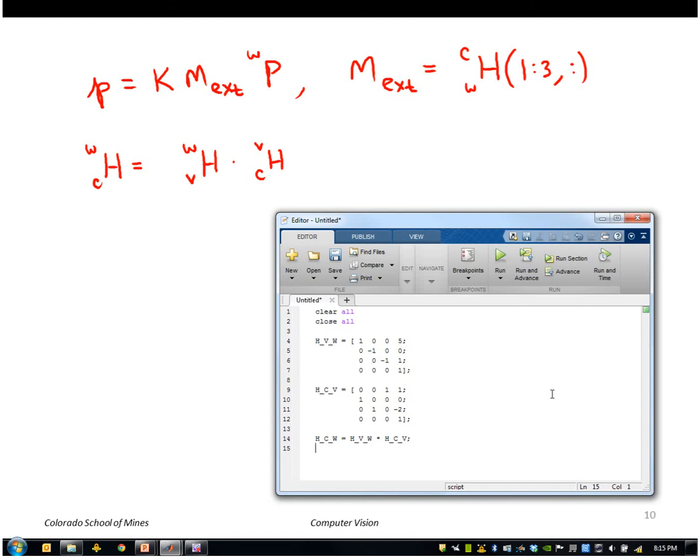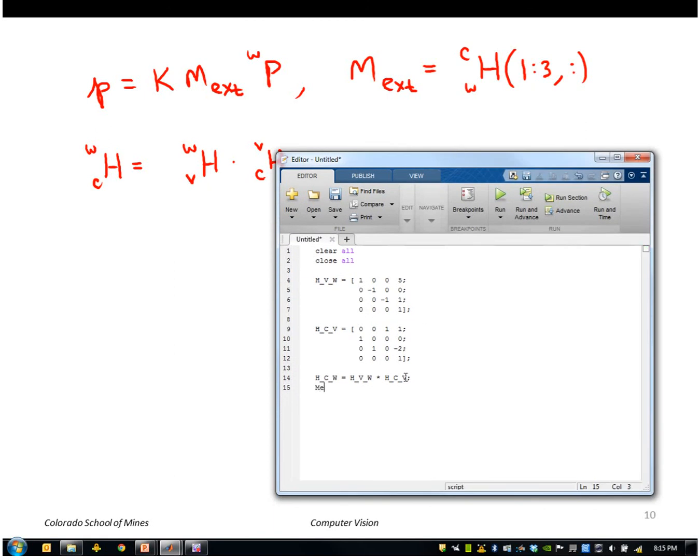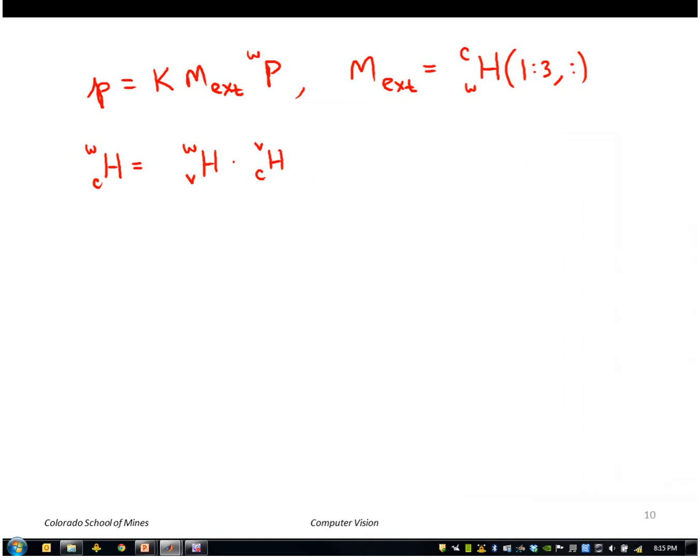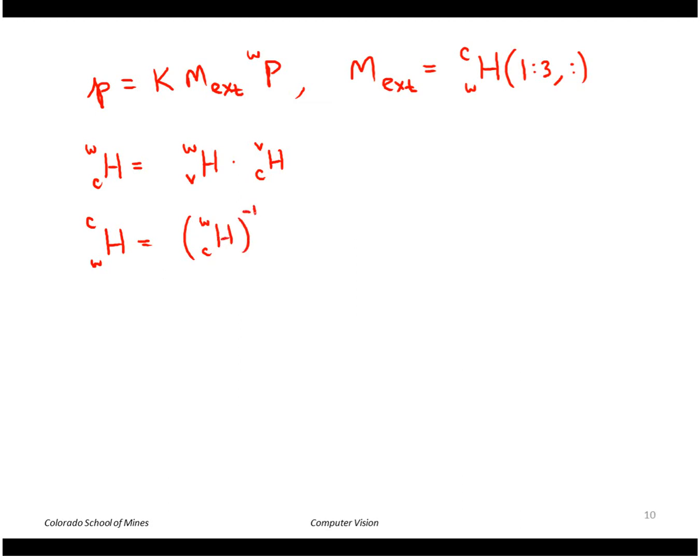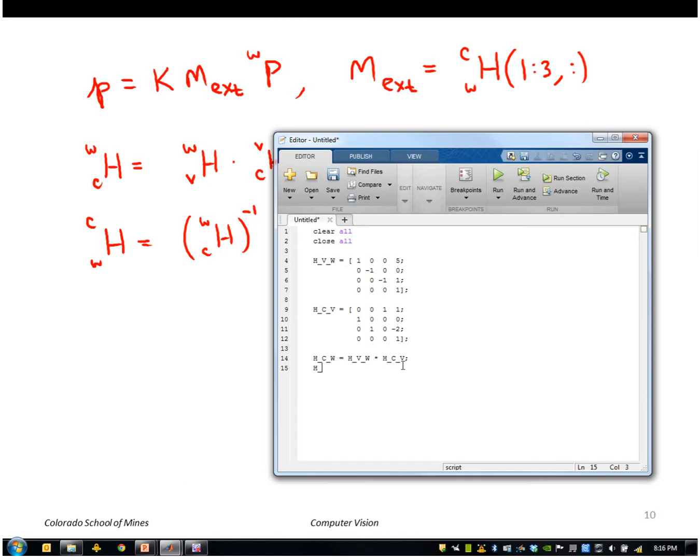Then I can take the first three rows of that as shown here. That'll be called M_ext. So it'll be H, oh wait, first thing, I'm sorry, first thing I want to do is invert this. So I really want H from world to camera. And that I get by inverting camera to world, just taking the matrix inverse. So that's world to camera is INV, that's matrix inverse, camera to world.